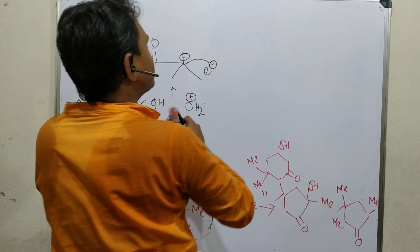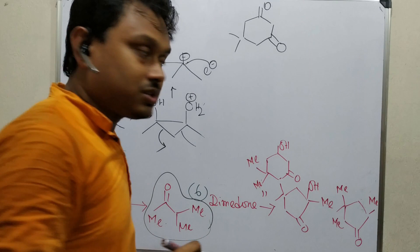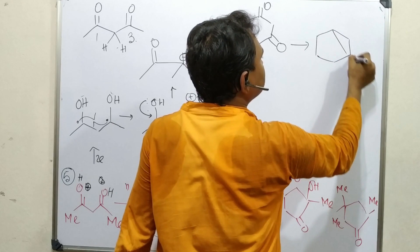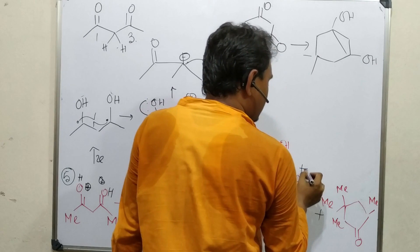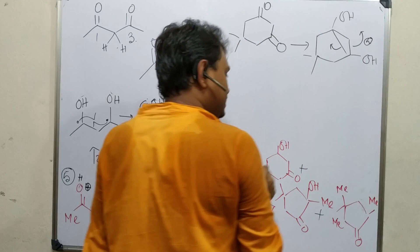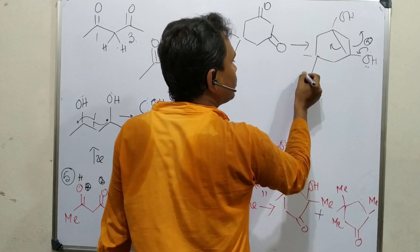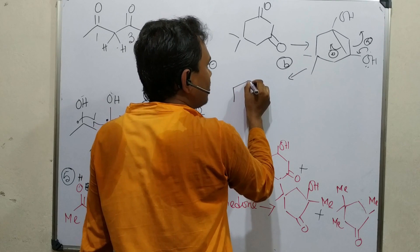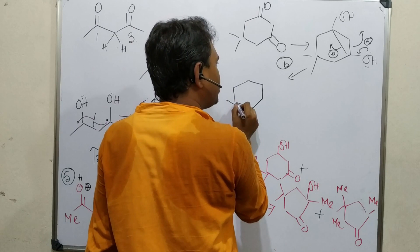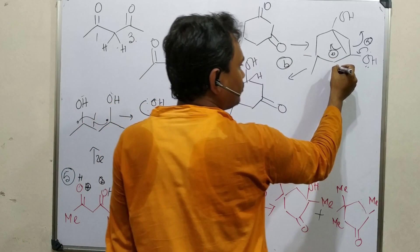The next example is dimedone, which also has a 1,3-dicarbonyl structure — you can consider it a sulfate-like cyclic compound. A similar process is followed, and three types of products are produced. There is a three-membered ring intermediate that can be broken in two ways. In path B, the six-membered ring remains intact and the three-membered ring opens to give a carbanion, which gets protonated by the abundant H⁺ in the medium, yielding the first product.